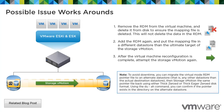To avoid downtime, you can migrate the virtual mode RDM pointer file to an alternate data store — any data store other than the actual destination — then storage vMotion the same pointer file back using either thick zeroed or thick eager zeroed disk format. Using the du -ah command, you can confirm if the pointer exists in the directory on the alternate data store.